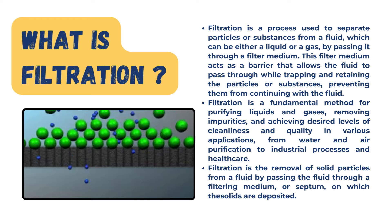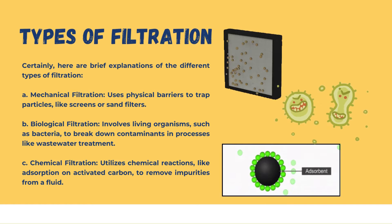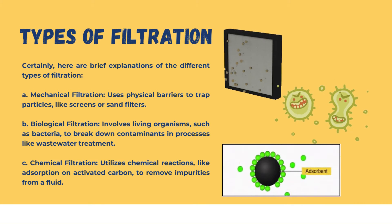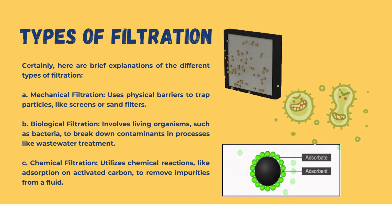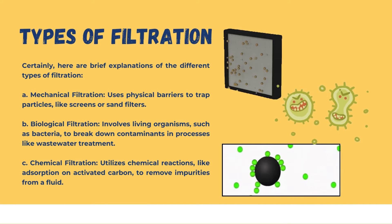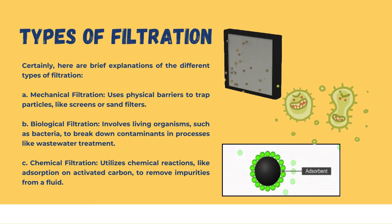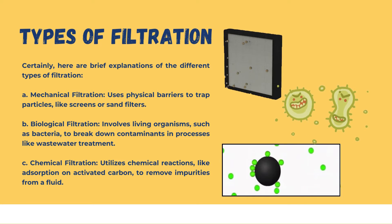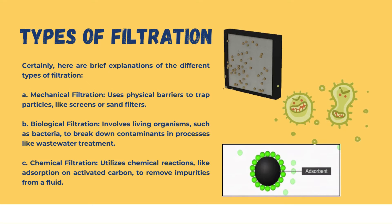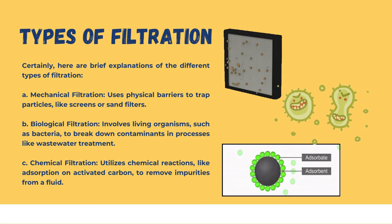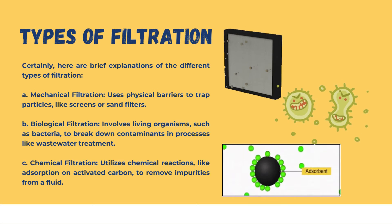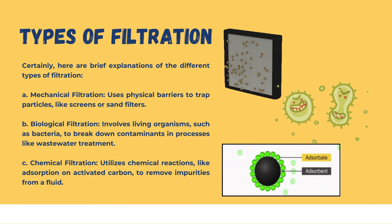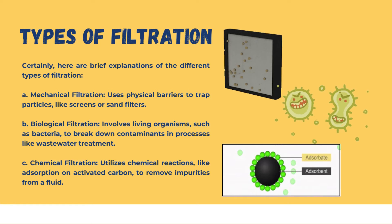Now, the types of filtration — there are three main types. The first is mechanical filtration, which uses physical barriers like screens or sand filters to trap particles. The second is biological filtration, where living organisms such as bacteria break down contaminants, typical in water treatment processes. The third is chemical filtration, which utilizes chemical reactions such as adsorption on activated carbon to remove impurities from the fluid.